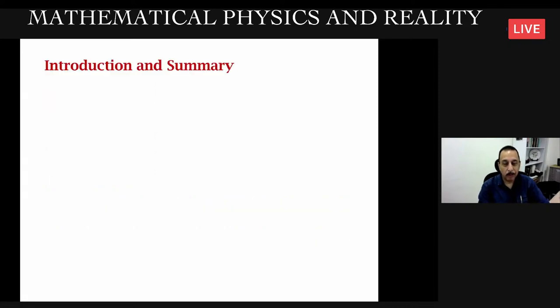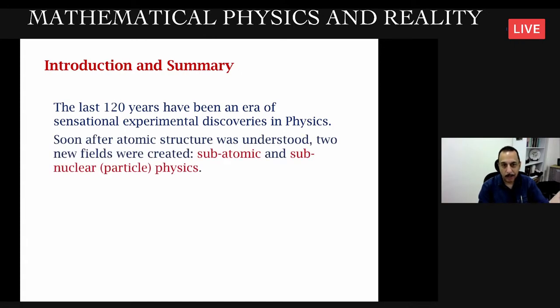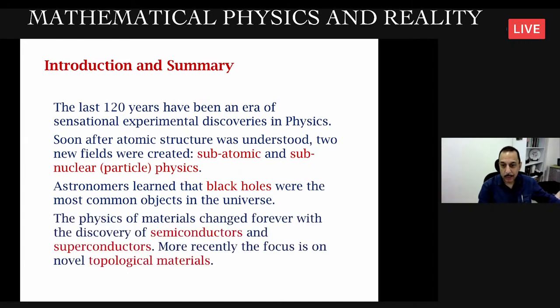The last 120 years have been an era of sensational experimental discoveries in physics. Soon after atomic structure was understood, two new fields were created: subatomic physics and subnuclear or particle physics. On a different scale, astronomers learned that black holes are the most common objects in the universe. The physics of materials changed drastically.